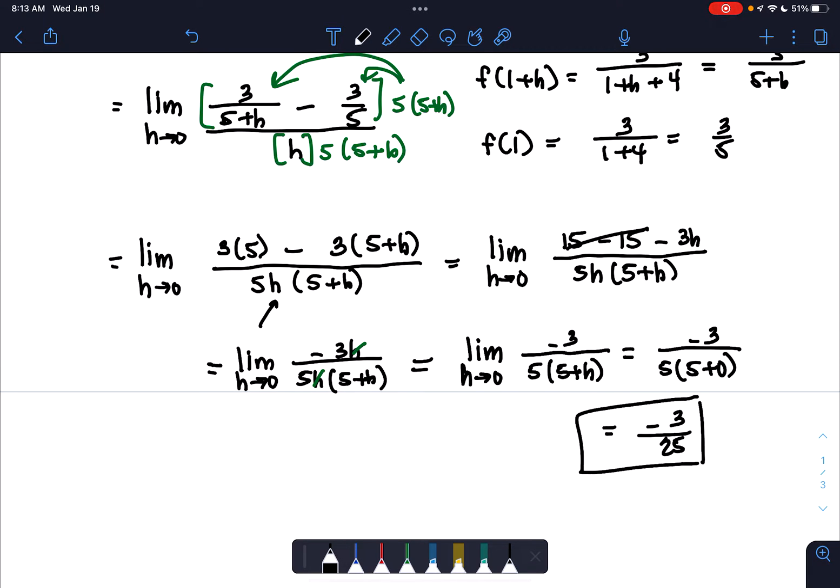So here again, if you were to graph the function f(x) and draw the tangent line when x equals 1, it would have a slope of negative 3 over 25. Thank you for watching.